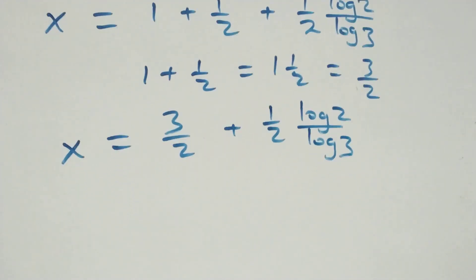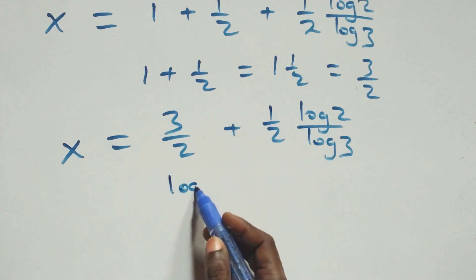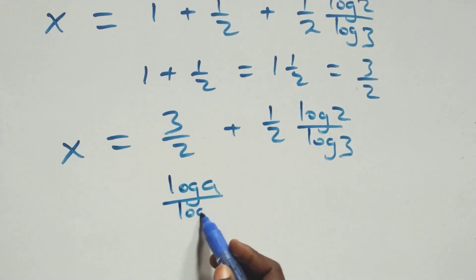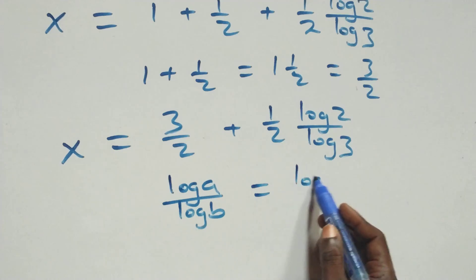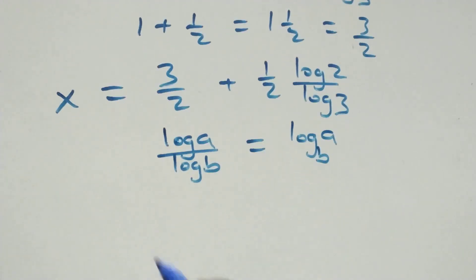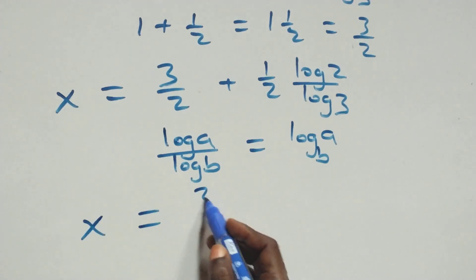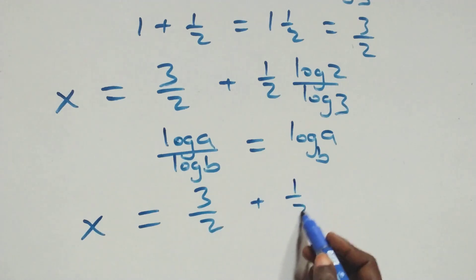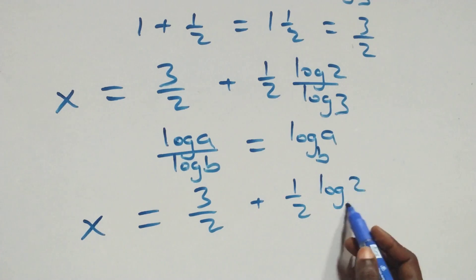Then here we apply the change of base rule: when we have log a over log b, this is the same thing as log a to base b. Then what we have here becomes x equals to 3 over 2 plus 1 over 2 log 2 to base 3.